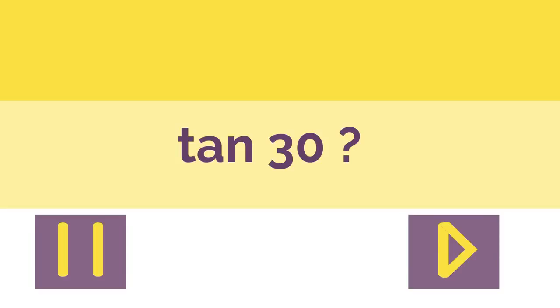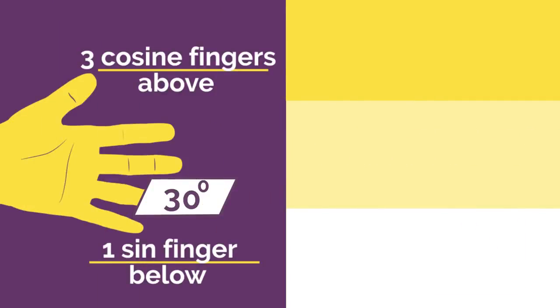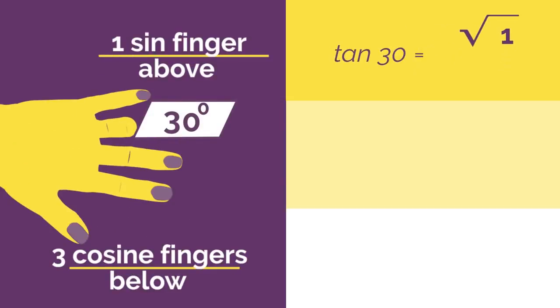What would tan 30 be? Work out the answer and click here when you're ready to check. Did you get square root 1 divided by square root 3, which would simplify to 1 over root 3.